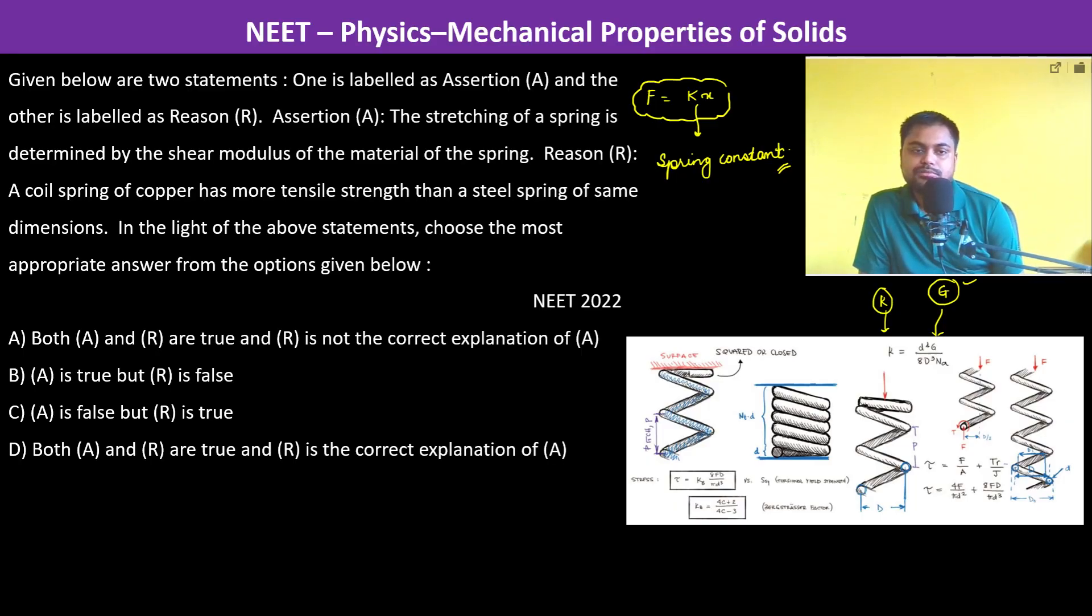The coil spring of copper has more tensile strength than a steel spring of the same dimensions. That depends upon the material actually. Therefore this is a clear-cut property of the material.